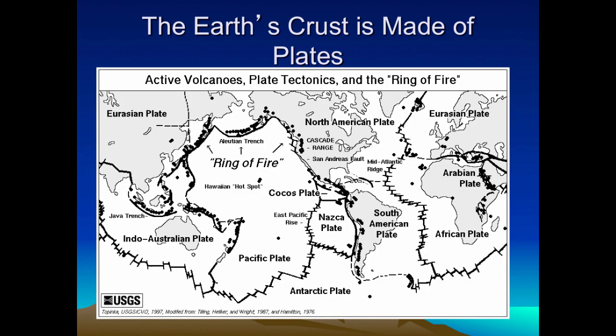Here is a map of the Earth's crust divided into what we call plates. You can see the seven major plates: the North American plate, the Pacific plate, the Antarctic plate, the African plate — and you can see the boundaries between them, which we call faults.